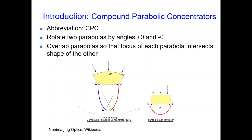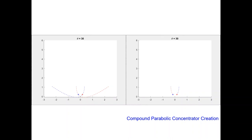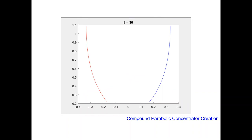A CPC involves two parabolas rotated apart by the same angle and overlapped, which essentially increases the range of light angles which can be collected at the base. To obtain a compound parabolic concentrator from two parabolas: first, rotate the two parabolas in opposite directions by the same angle; second, shift them so that the focus of each parabola intersects with the other parabola; third and fourth, crop the concentrator at the top and bottom. The bottom is the base where your semiconductor would be located.